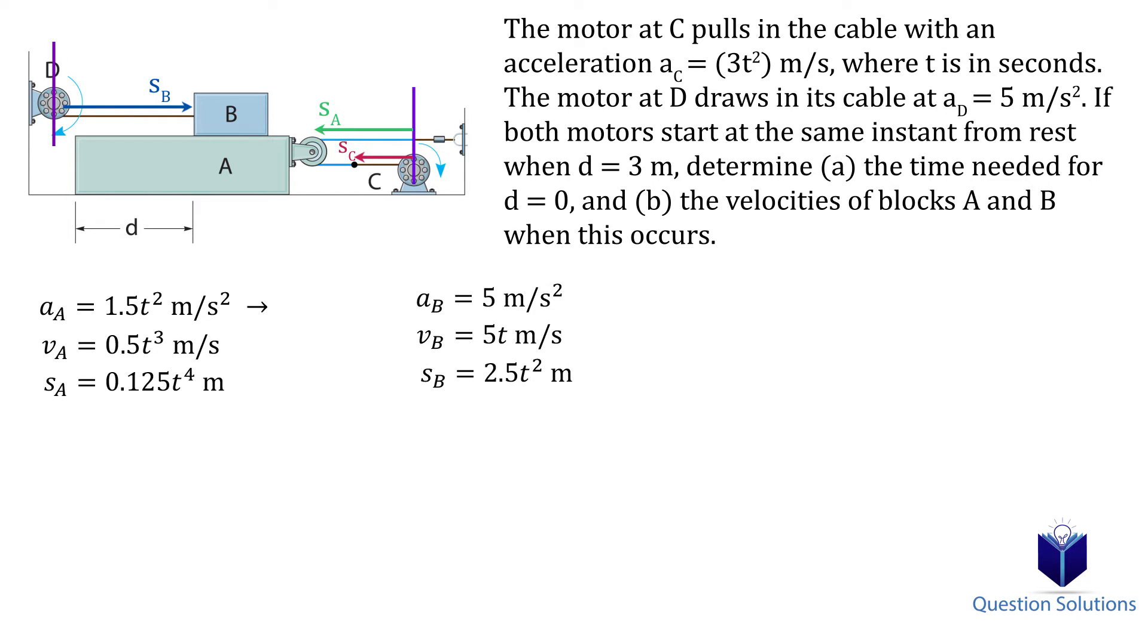Now we can find the time it takes for d to equal 0. Or in other words, for both blocks to travel in opposite directions to create a gap of 3 meters from their initial location. So we can represent that with an equation like this. Plug in everything we just found and solve for t. Again, this t value we just found represents the time for both blocks to travel a total distance of 3 meters apart from each other.